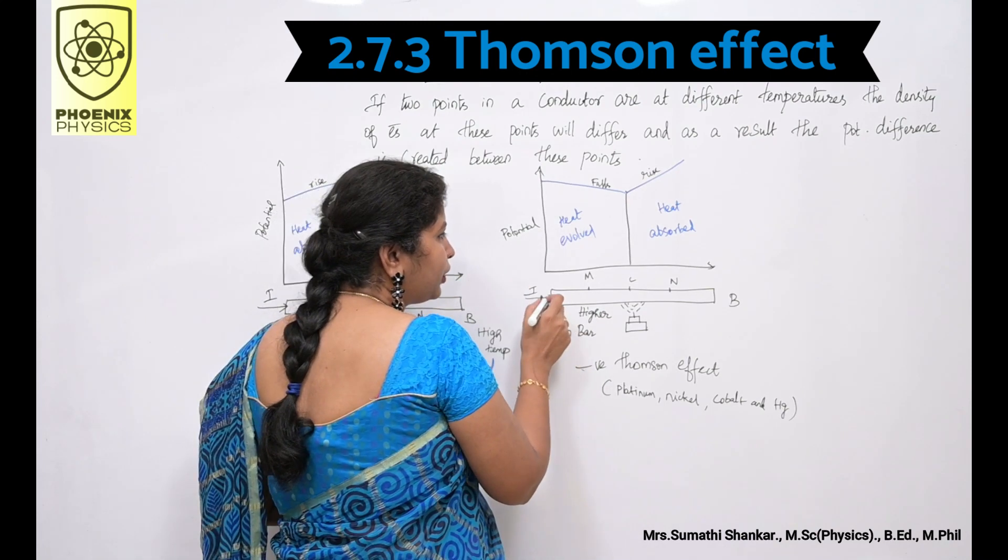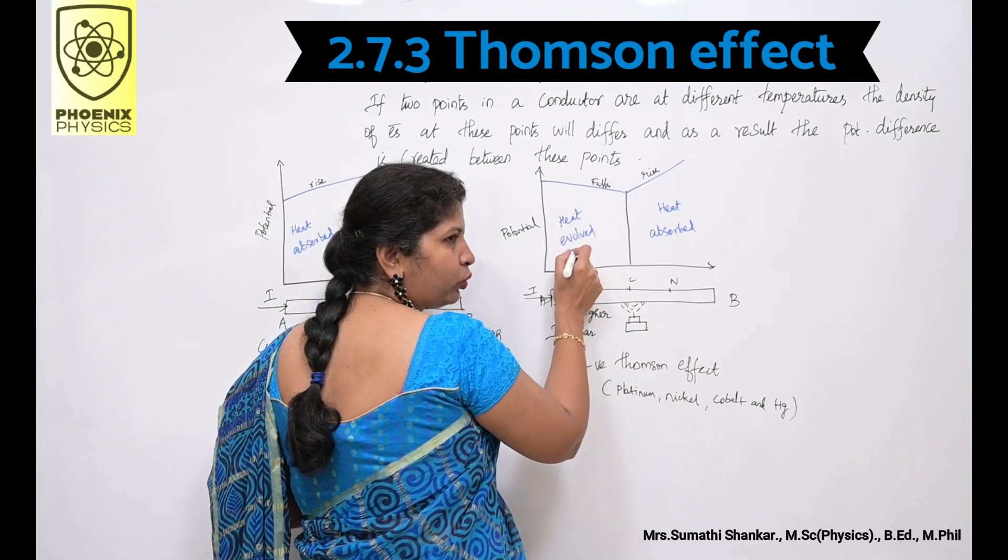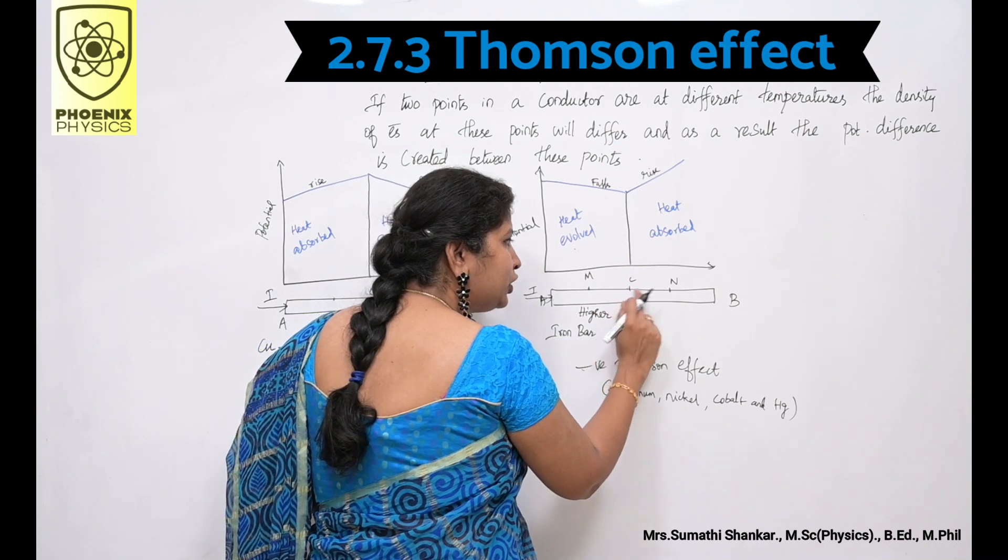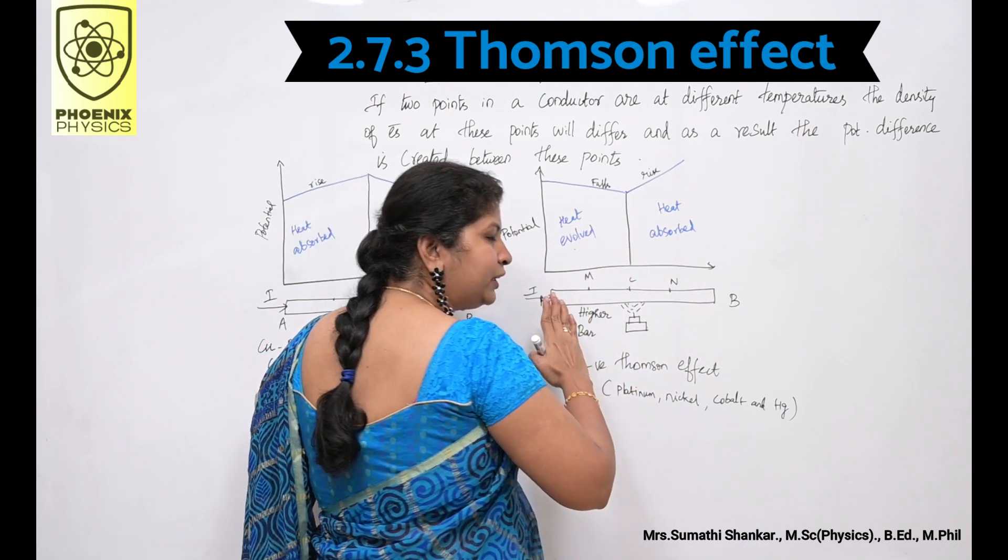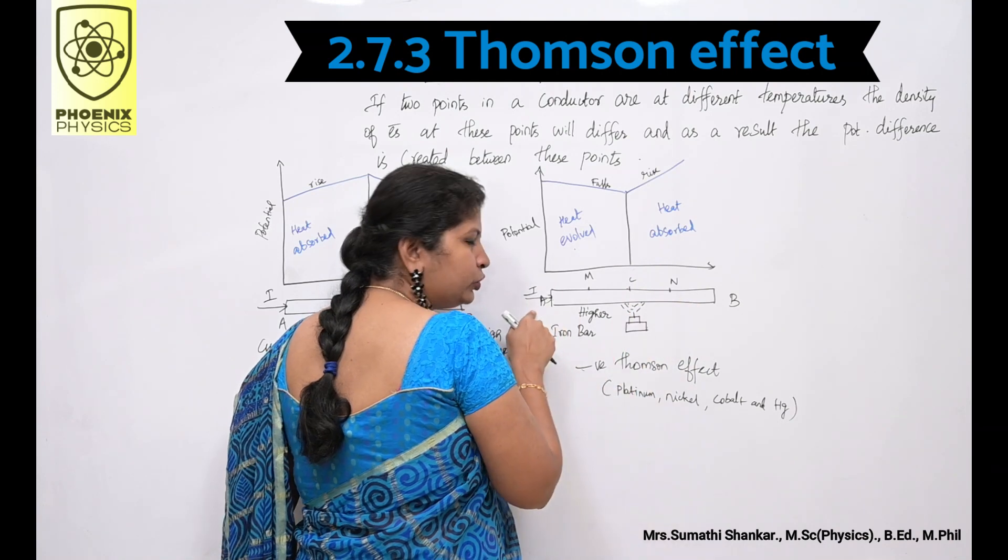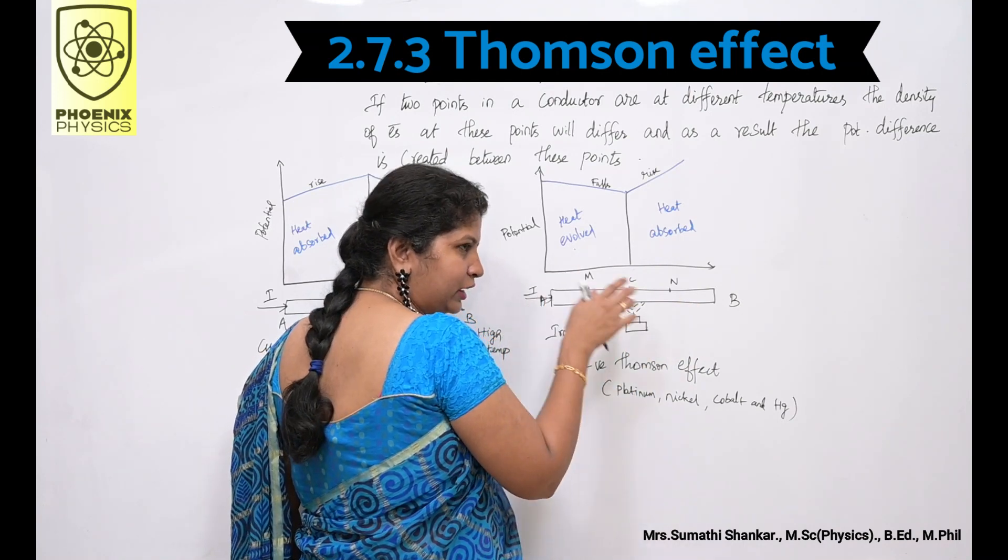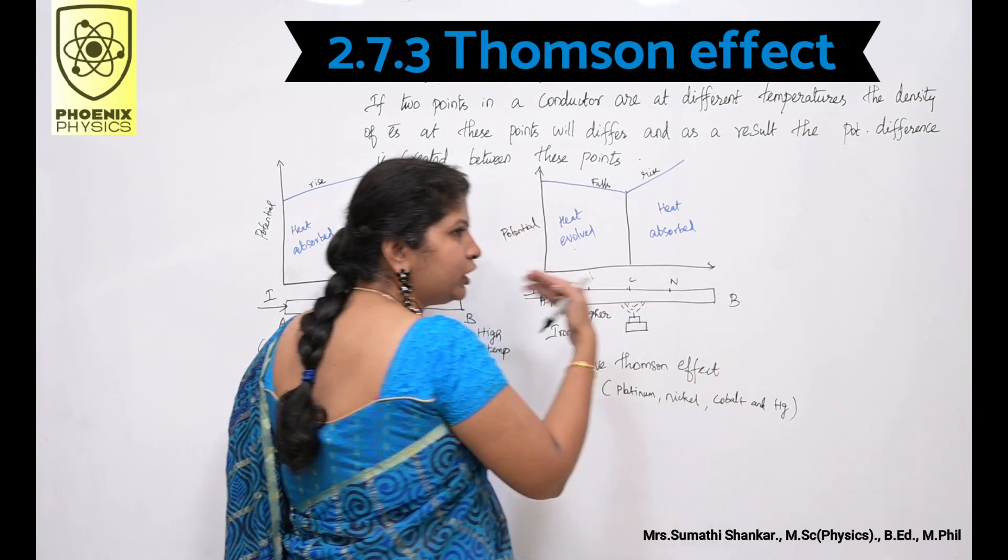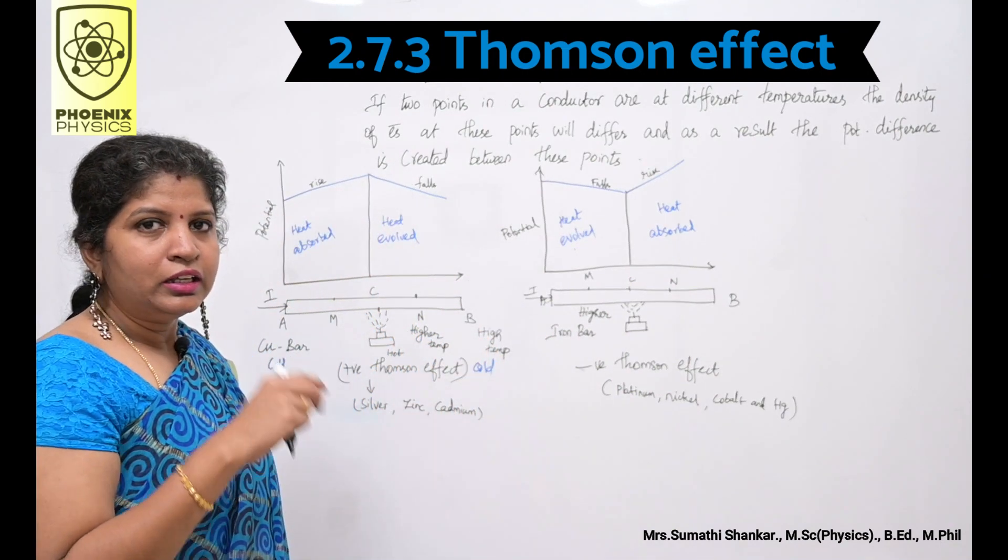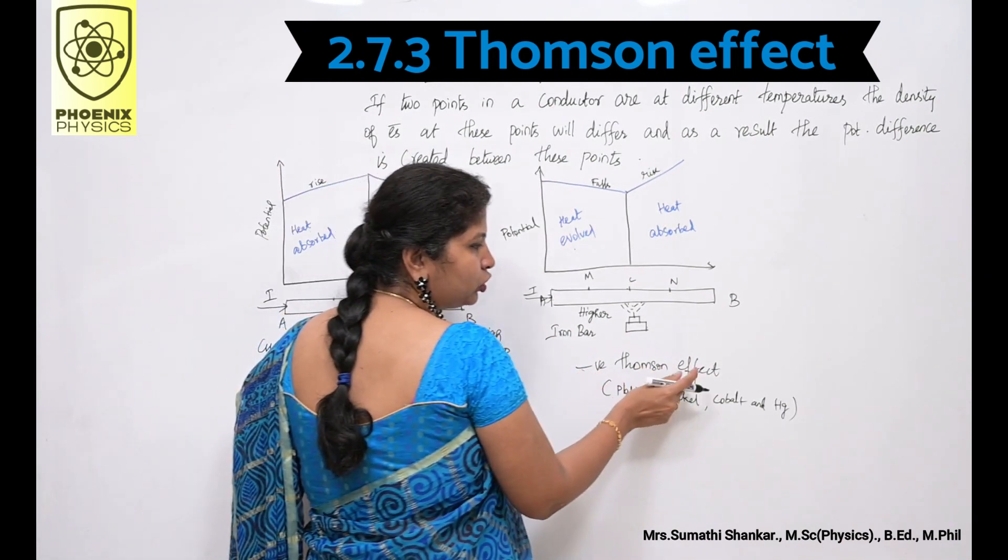Here, from A to C, heat is evolved and C to B, heat is absorbed. Heat is transferred due to the current flow in the direction opposite to the current direction. This is known as negative Thomson effect.